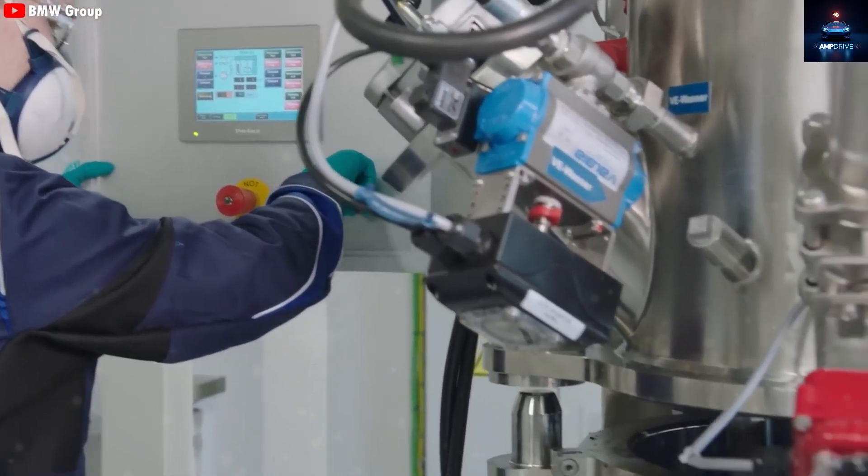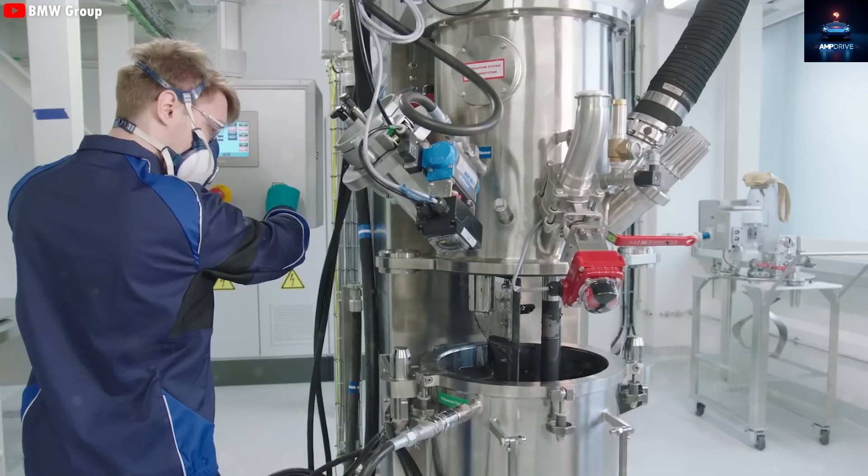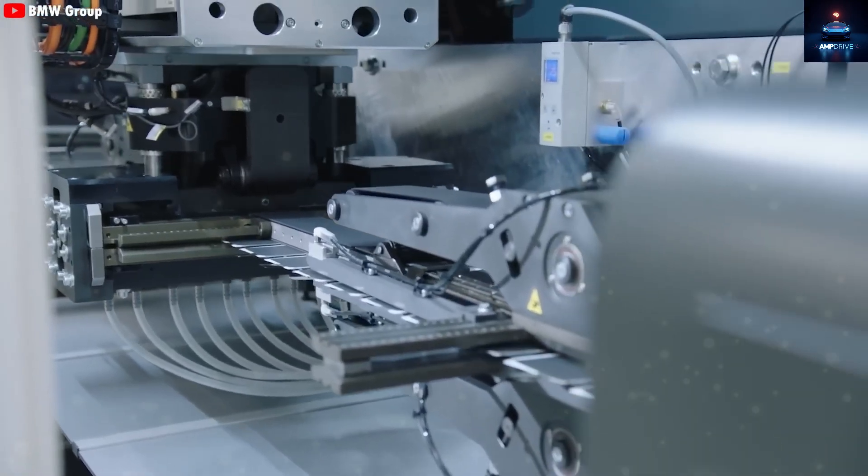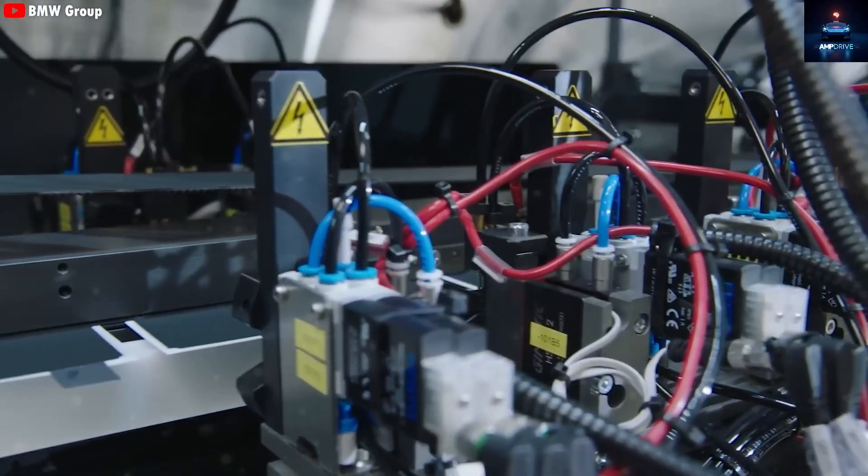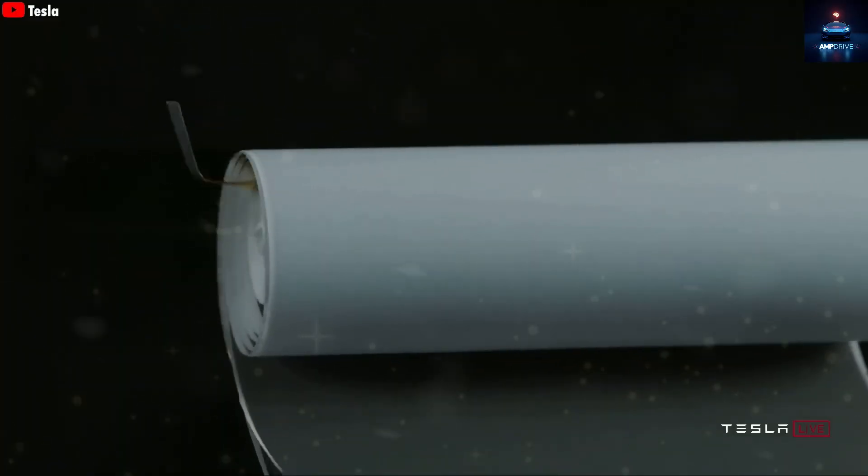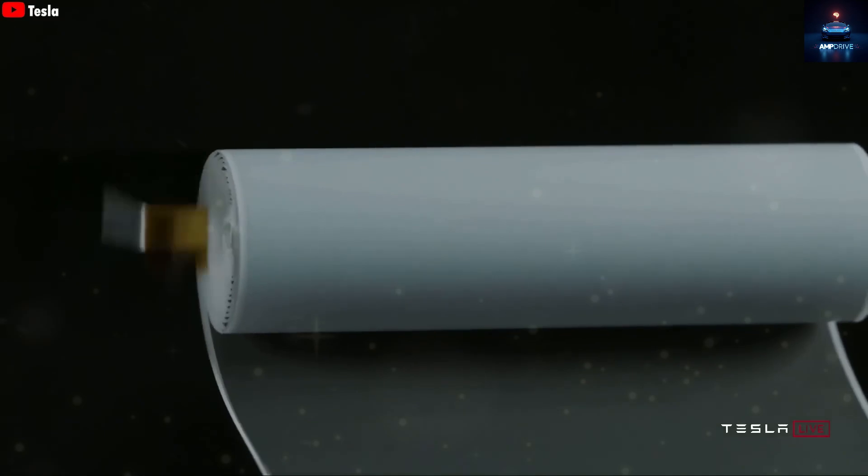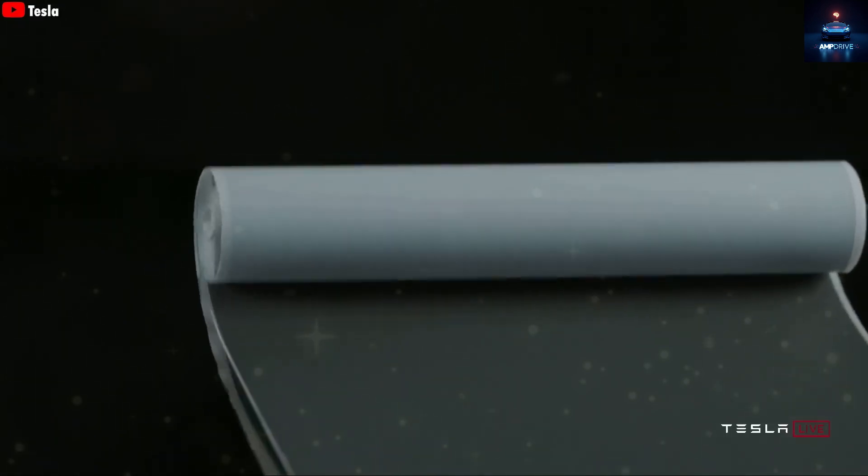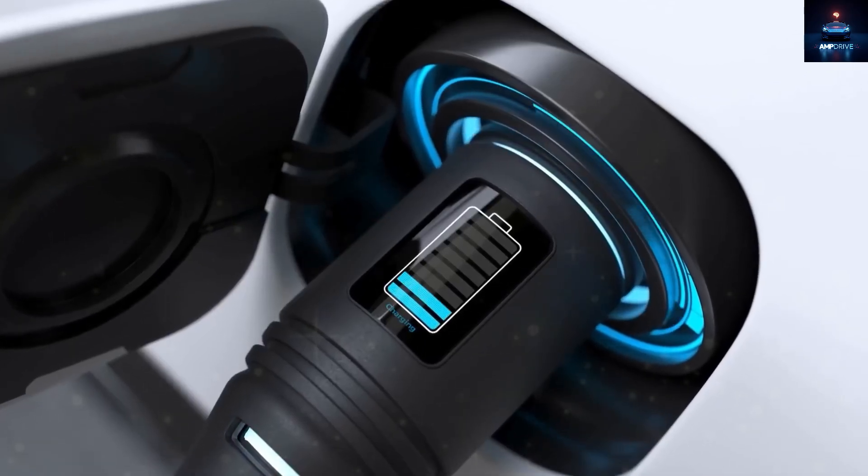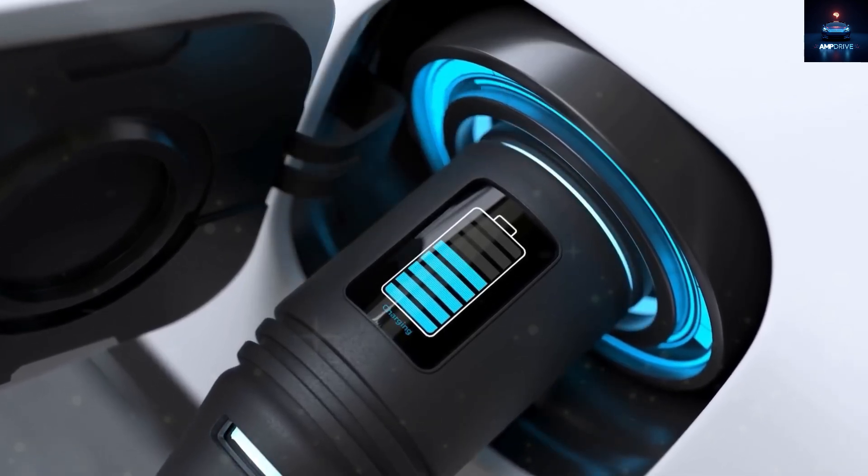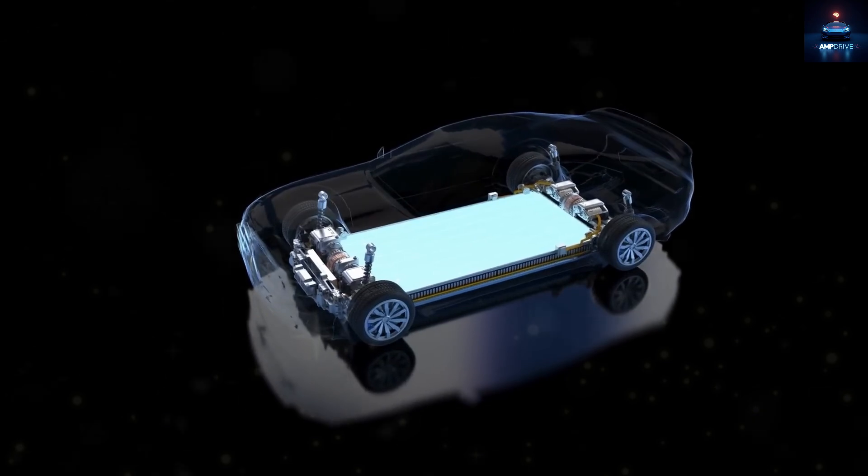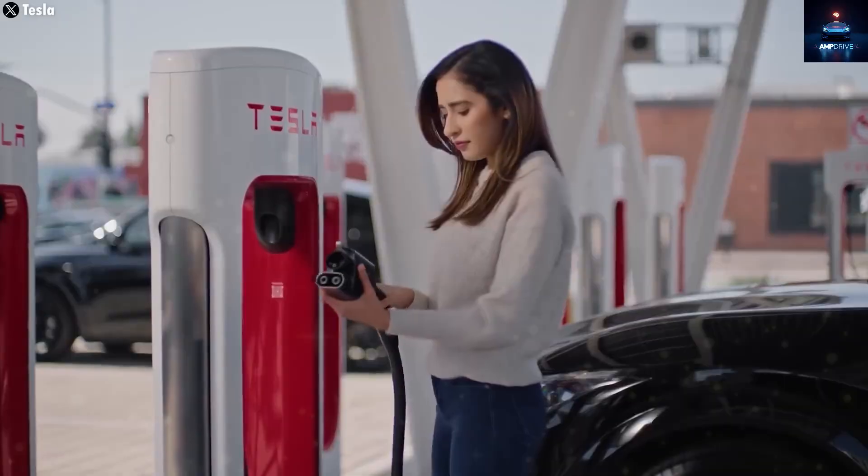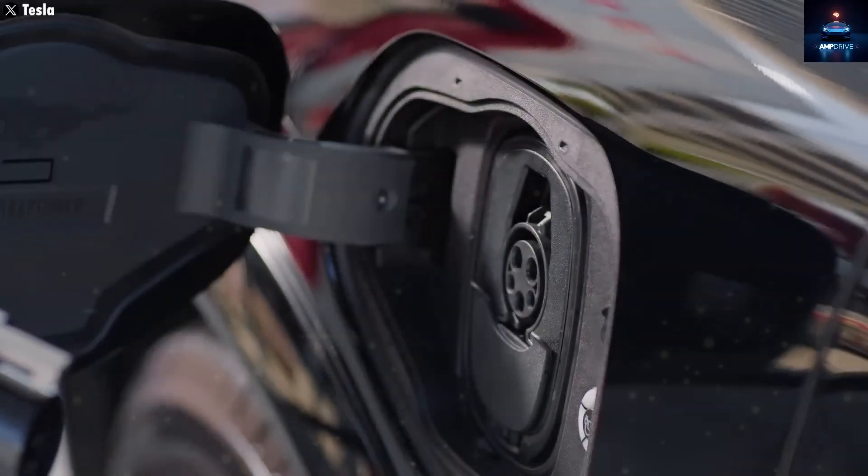Real-world data shows the 4680 can go from 0 to 60% in 20 minutes. Paired with an 800-volt electrical system, it gets even faster. The Cybertruck, which has a 123-kilowatt-hour battery, can go from 10% to 80% charge in about 30 minutes. Earlier Model Y units with 4,680 batteries also charged fast. One owner said their SUV charged from 0 to 80% in 32 minutes at a supercharger station in California using a 250-kilowatt charger. While solid-state batteries may charge even faster, they are not yet as dependable.